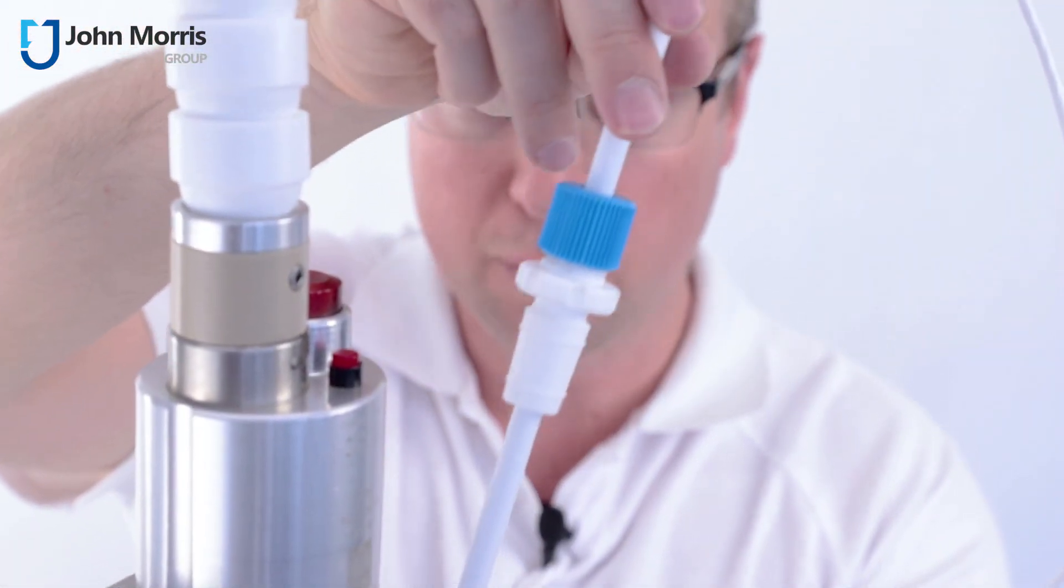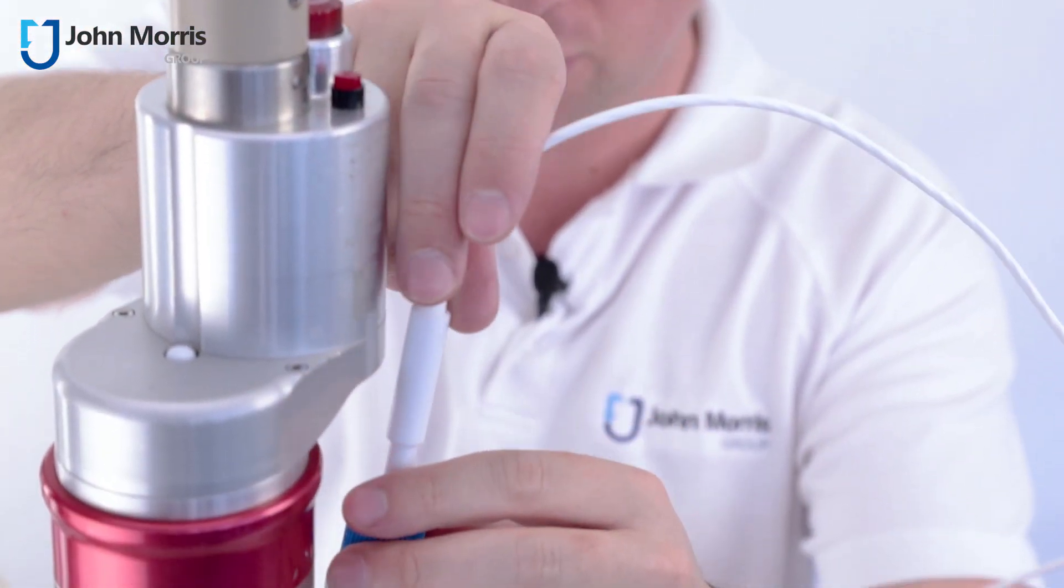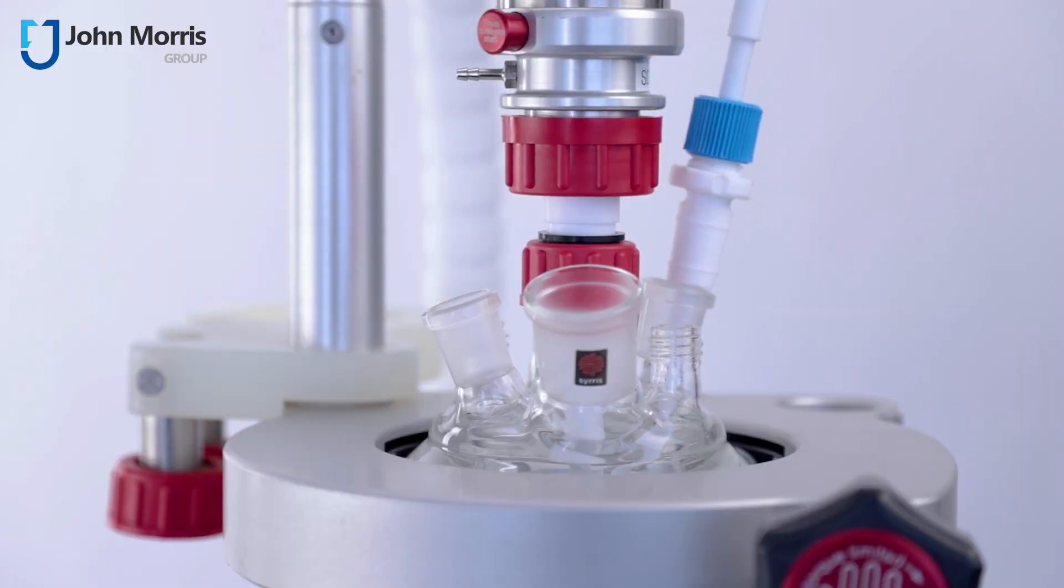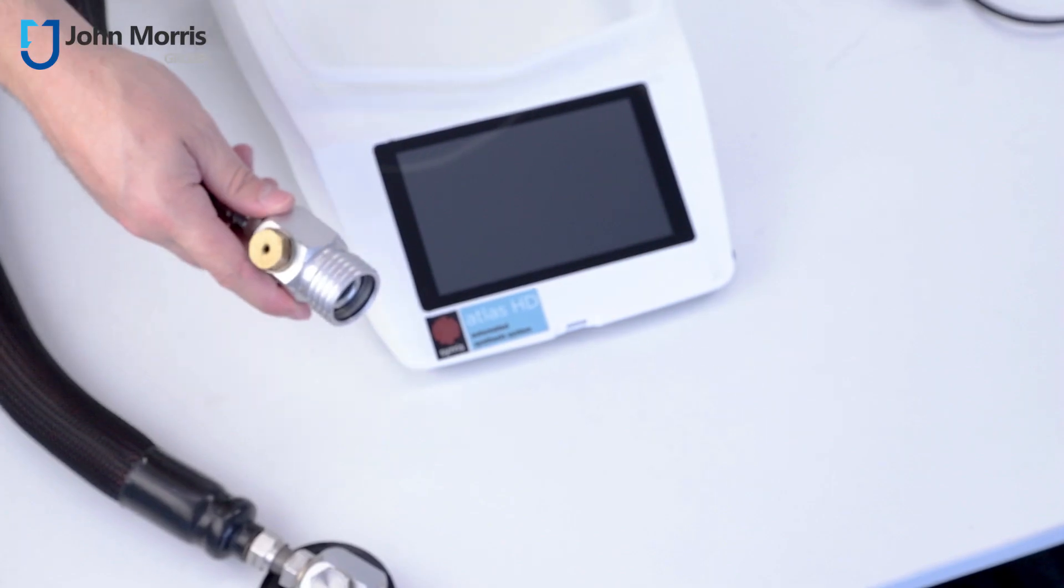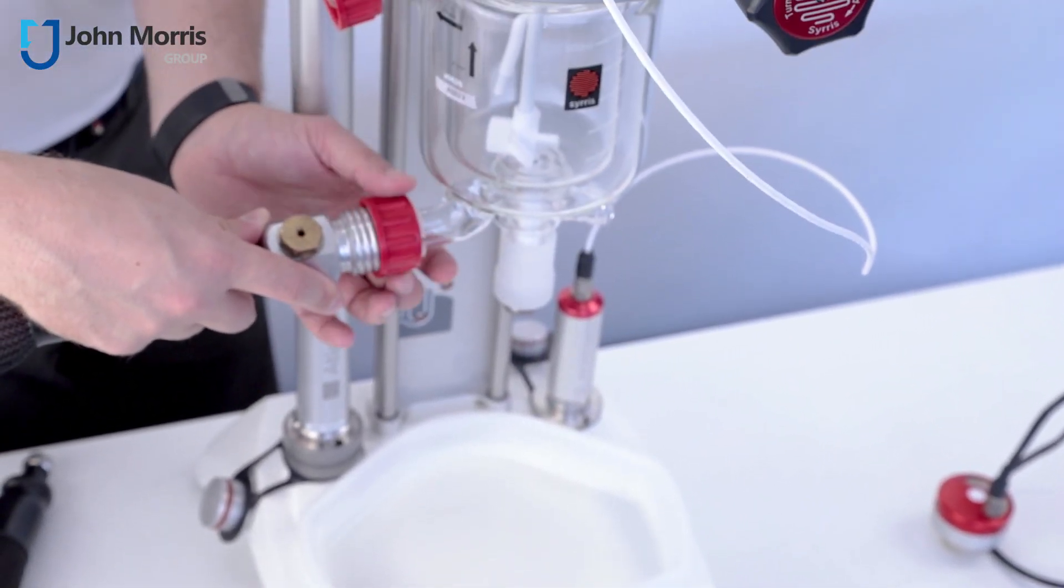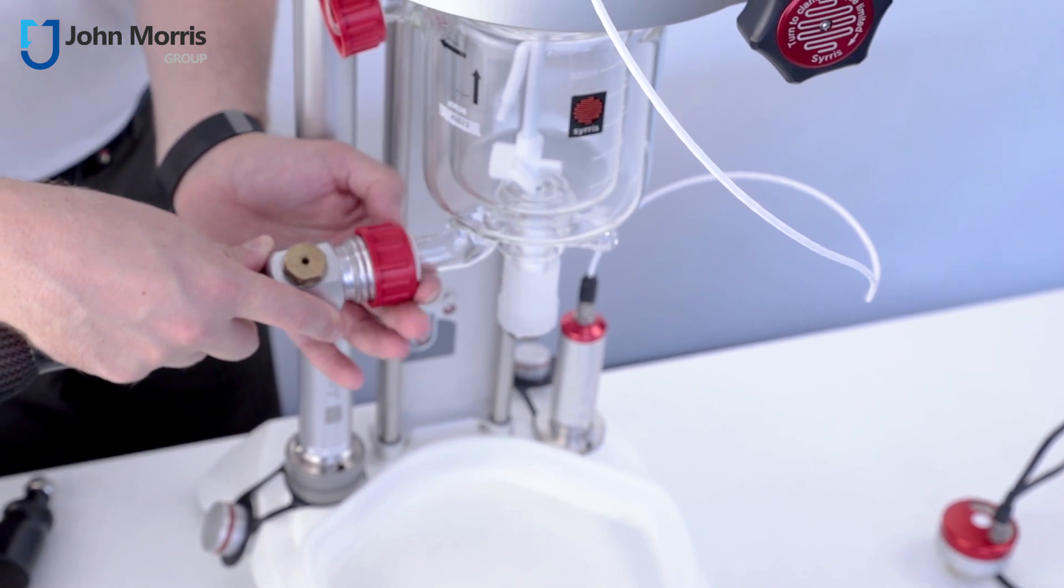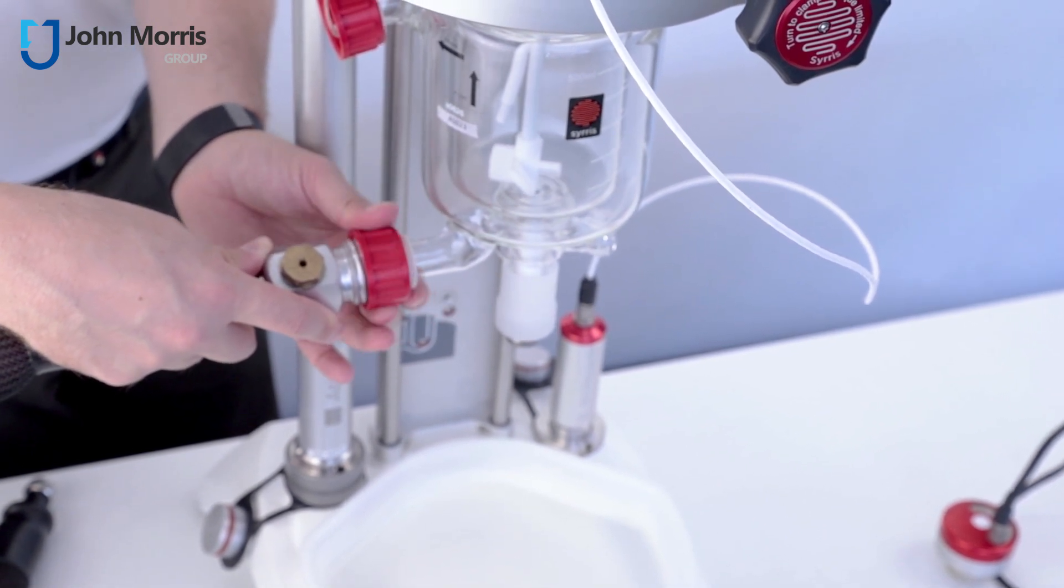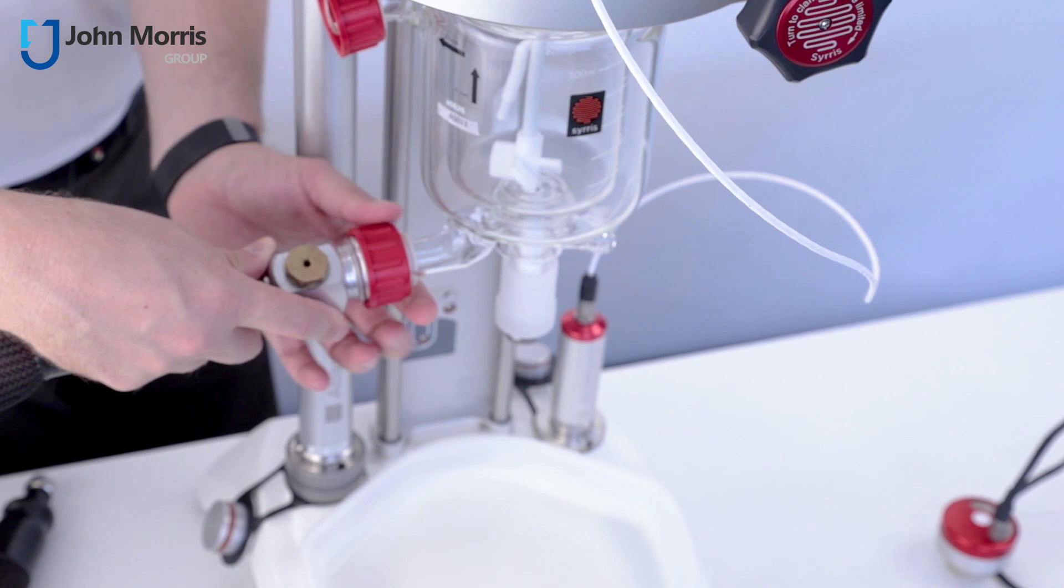Now we're going to put in one of the probes, in this case it's a temperature probe, and away we go. Finally we're going to put on the tubes for our jacketed reactor and again no tools required, just finger tighten.